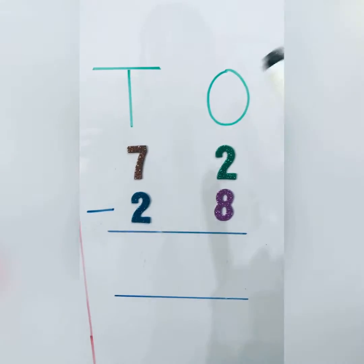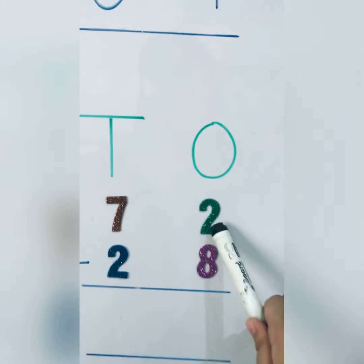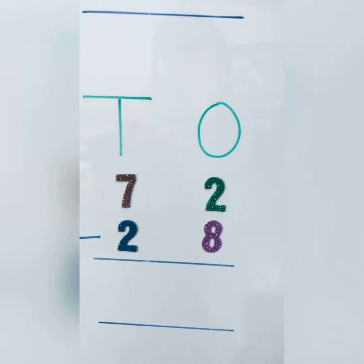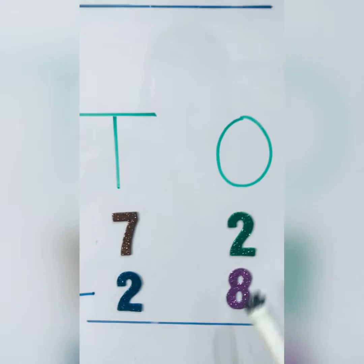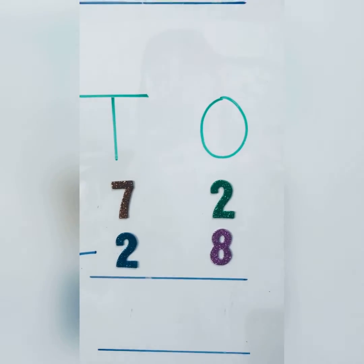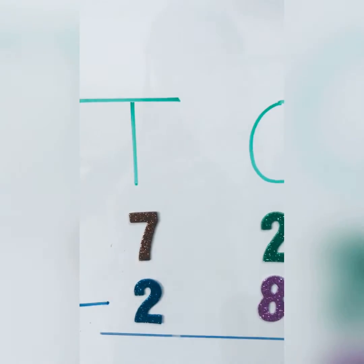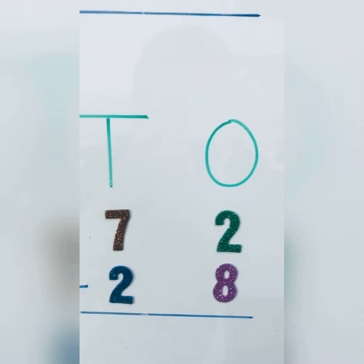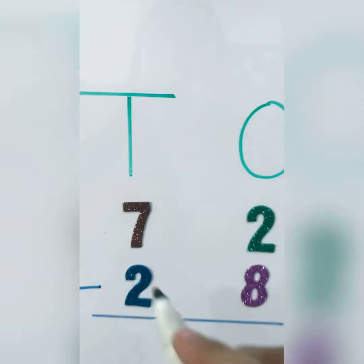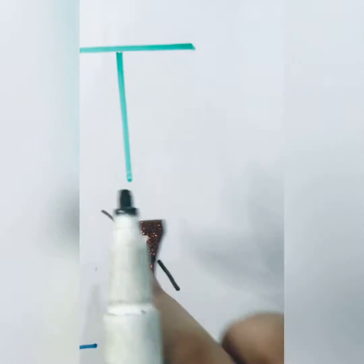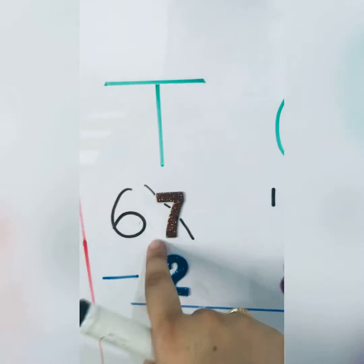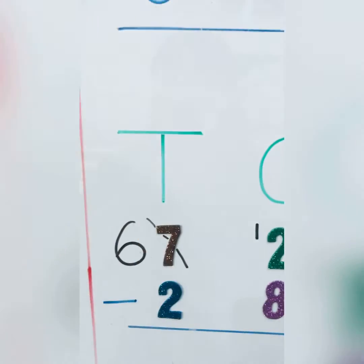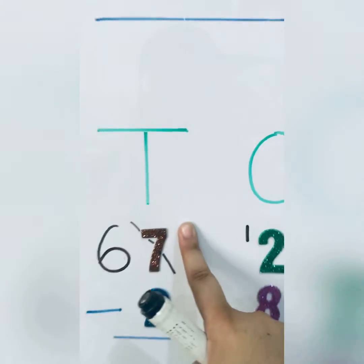In question number two, again I will start from the ones column. Over here you can see that I have two above and I have eight below. That means two is the smaller number. So how am I going to subtract eight from two? Don't worry. What we are going to do in subtraction is we will borrow one from the tens column. So for example this is my seven. If I'm going to borrow one from seven, that means only six is left over here and I have borrowed one over here.